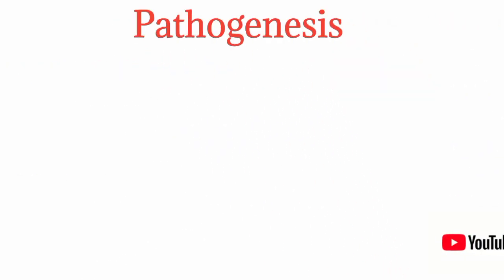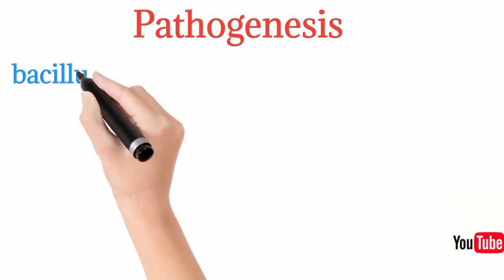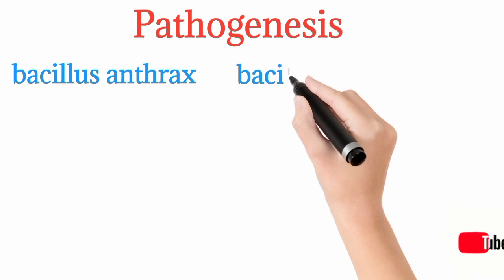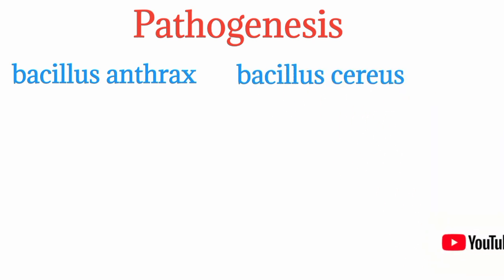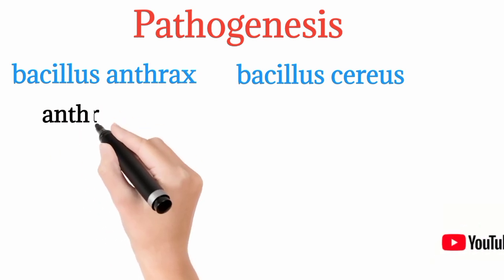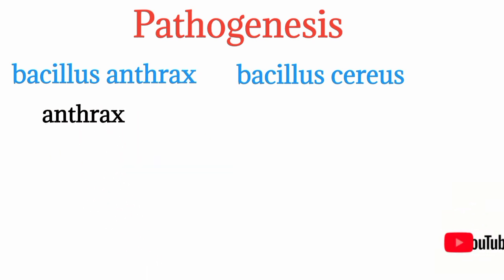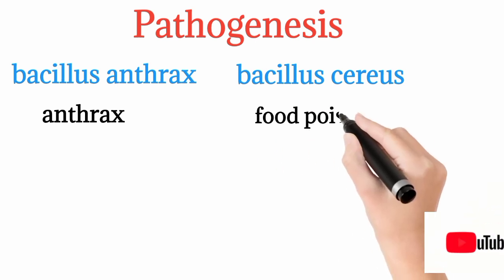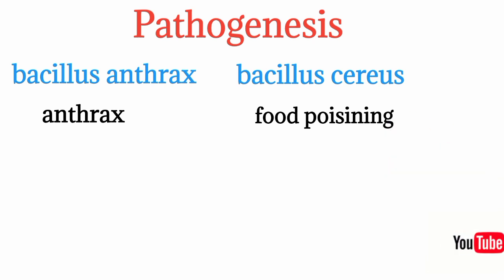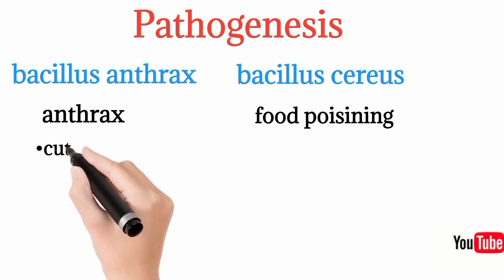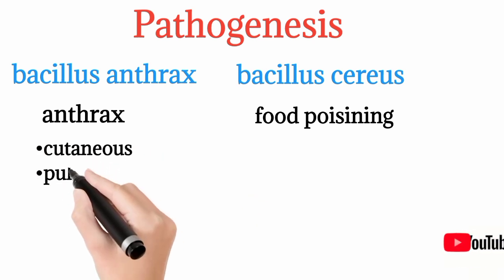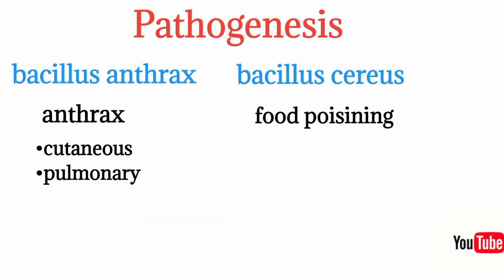Within Bacillus species, we have Bacillus anthracis and Bacillus cereus. Bacillus anthracis is spore-forming and causes anthrax, while Bacillus cereus causes food poisoning. The diseases are caused by their exotoxins or spores entering the body.